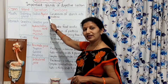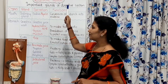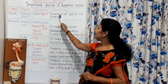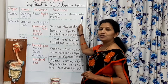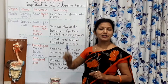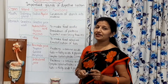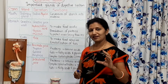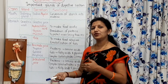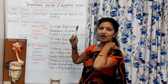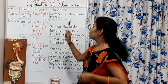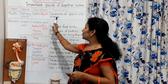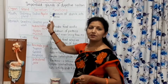Another name for ptyalin is salivary amylase. What is its function? Conversion of starch into maltose. By the action of ptyalin, starch — which is a polysaccharide — is converted into maltose, a simpler form. Maltose is one type of sugar.